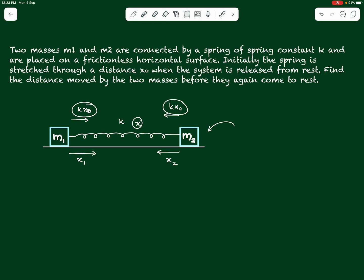The net force on the system of two blocks and spring together is zero, and hence the center of mass has no acceleration. Since the system was initially at rest — the two blocks and the stretched spring were kept at rest — the velocity of the center of mass will remain zero. This means the center of mass stays at rest, so if m1 moves a distance x1 towards right and m2 moves a distance x2 towards left, we can write m1*x1 = m2*x2.